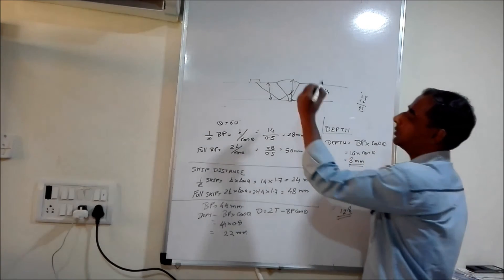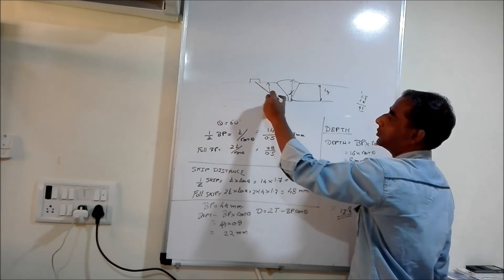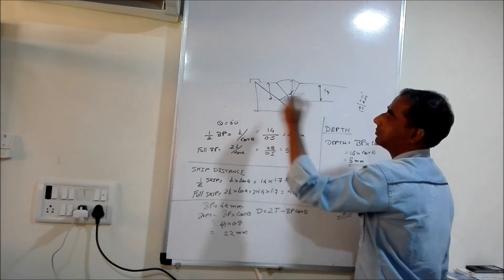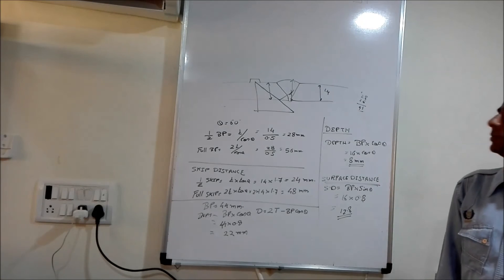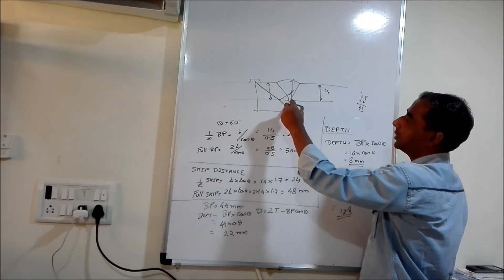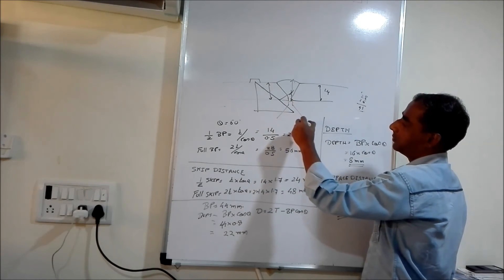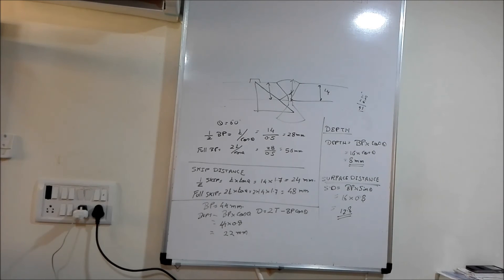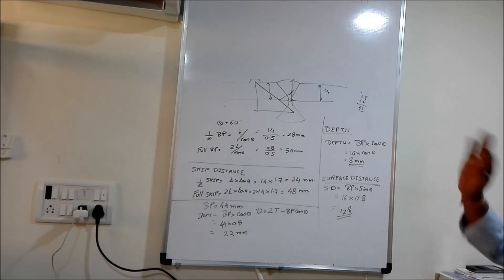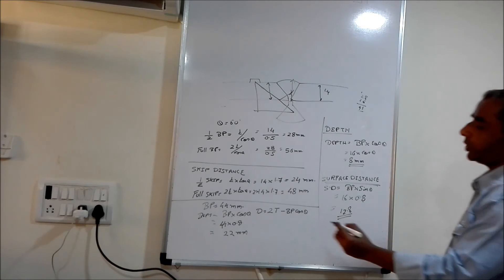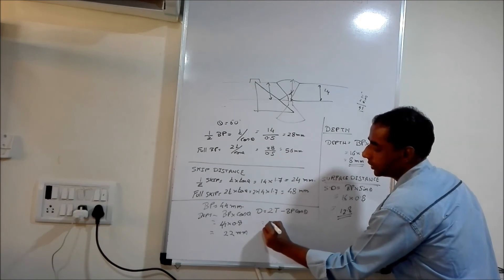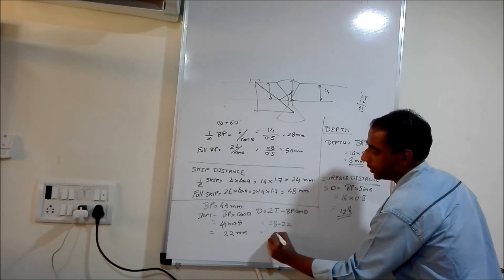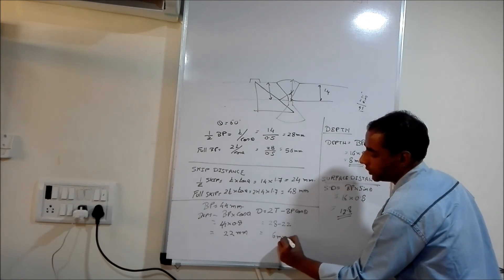This is something like this — you extend it like this. This is the mirror image of the ocean ray. So when I do it: 2t minus bp cos theta. That is, 28 minus 22. So depth is 6 mm.